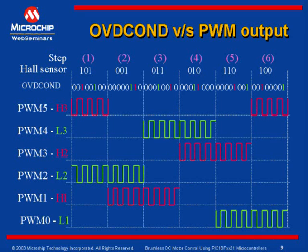Speed variation is achieved by varying the duty cycle of each PWM. To increase the speed, the active part of the duty cycle needs to be increased, and to reduce the speed, the active time is reduced. By doing this, the average voltage applied across the motor winding varies, controlling the motor speed. This slide shows the relationship between the OVDCOND register and the PWM outputs, which are controlling the six switches. The PWMs are passed and inhibited according to the sequence discussed earlier.